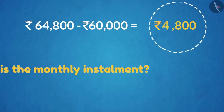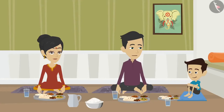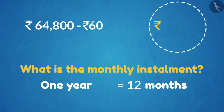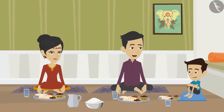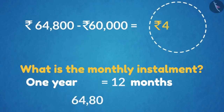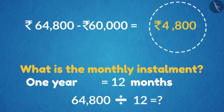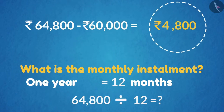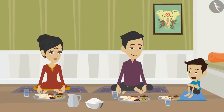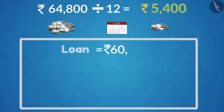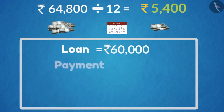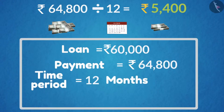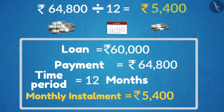But how do we know the amount to pay each month? There are 12 months in a year, so we divide the total amount by 12. 64,800 divided by 12 equals 5,400 rupees. So if we take a loan of 60,000 rupees and repay 64,800 in 1 year, we deposit 5,400 rupees every month as an installment.